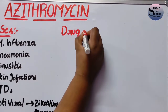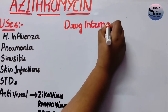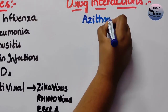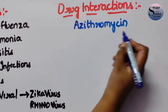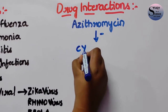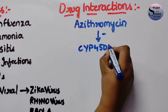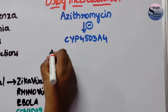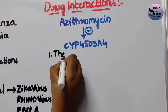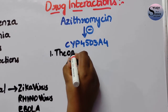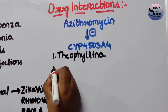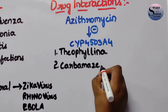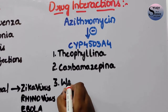Regarding drug interactions, Azithromycin mainly inhibits the hepatic enzyme CYP3A4 (cytochrome P450 3A4). Drugs that are metabolized by this enzyme get inhibited and interact, including theophylline, carbamazepine, warfarin, and digoxin especially.